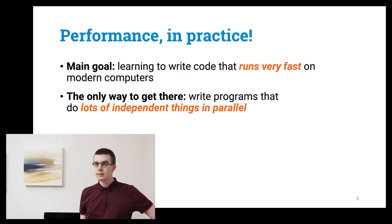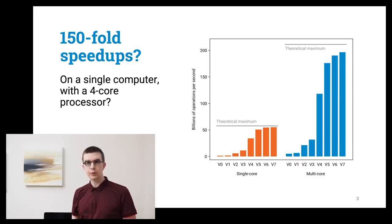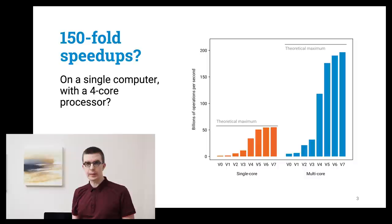Welcome everyone to the Programming Parallel Computers course. In this course our main goal is to learn to write code that runs very fast on modern computers. As we will see soon, basically the only way to get there is to write code in which lots of things are happening simultaneously in parallel. We will see how efficient use of all parallel computing resources of a modern CPU can lead to performance improvements of a factor as high as 150.